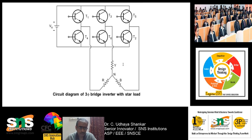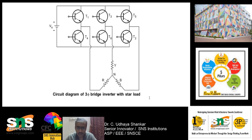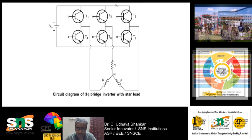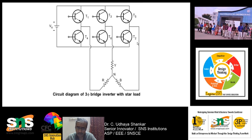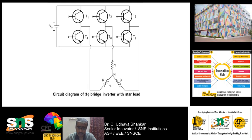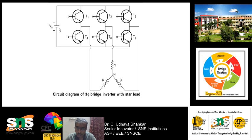For example, if you switch on T1 and T4, R-phase will be connected to the source. If you switch on T3 and T6, Y-phase will be connected. If you switch on T2 and T5, B-phase will be connected from positive. If T1 is on, the positive terminal is connected to R-phase. If T4 is triggered, the negative of the battery is connected to R-phase. By switching on the upper transistors, positive voltage is given to the load; by switching on the lower transistors, the negative side is connected to the load.